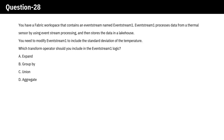You have a fabric workspace that contains an event stream named Event Stream 1. Event Stream 1 processes data from a thermal sensor by using event stream processing and then stores the data in a lake house. You need to modify Event Stream 1 to include the standard deviation of the temperature. Which transform operator should you include in the Event Stream 1 logic?